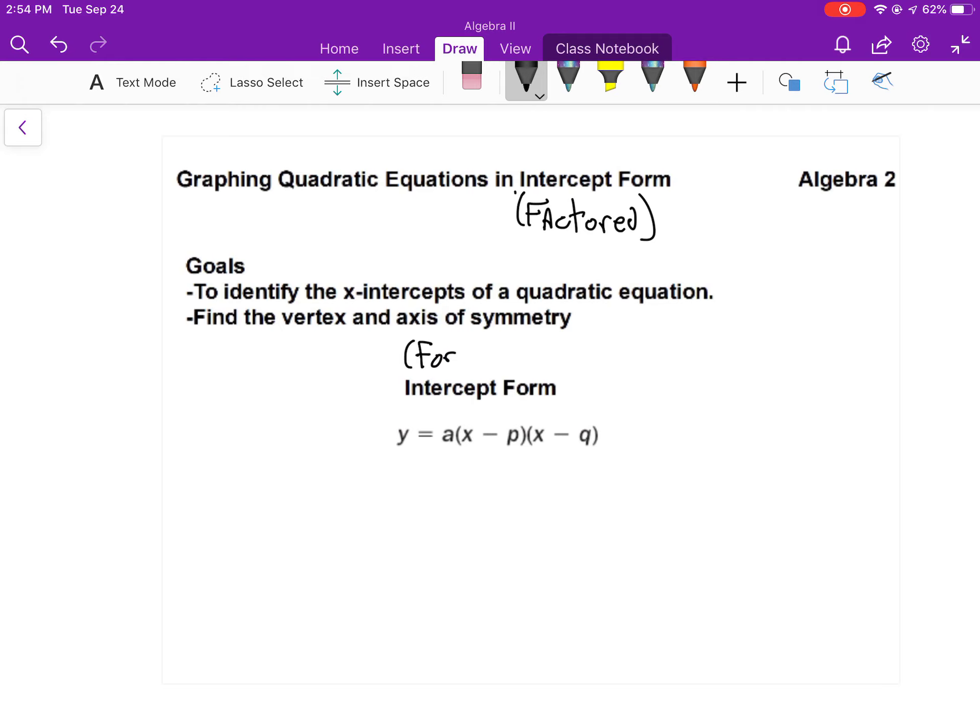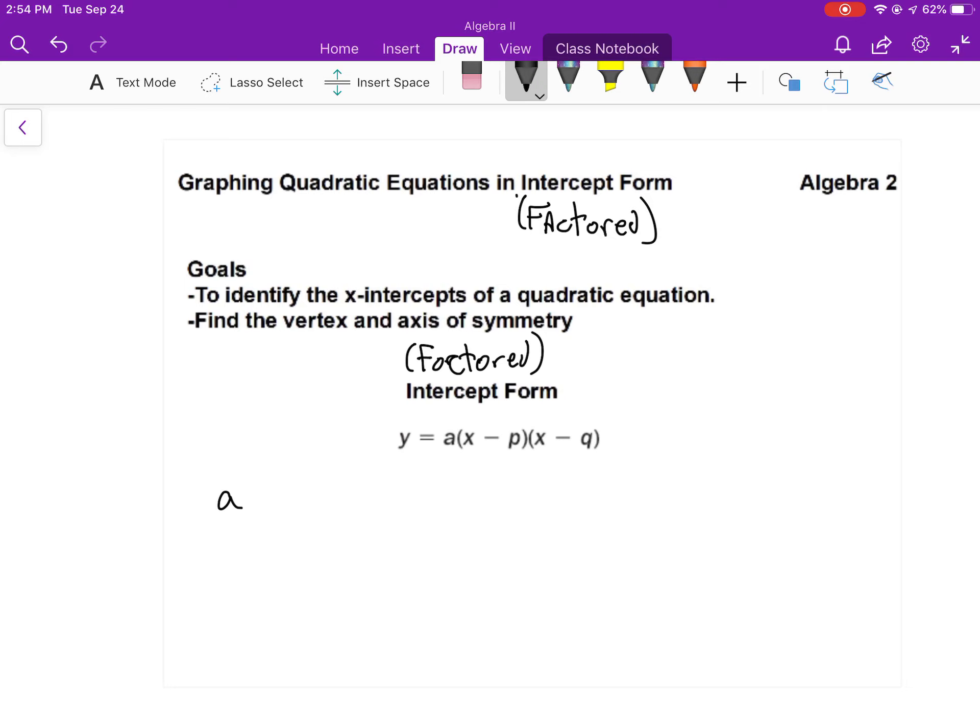I call it factored form because it is basically your polynomial factored. You've got your sets of parentheses where a is the same thing as before. A is greater than 0, it opens up. A is less than 0, it opens down. If the absolute value of A is bigger than 1, it's narrow. If the absolute value of A is less than 1 or bigger than 0, then it is wide.